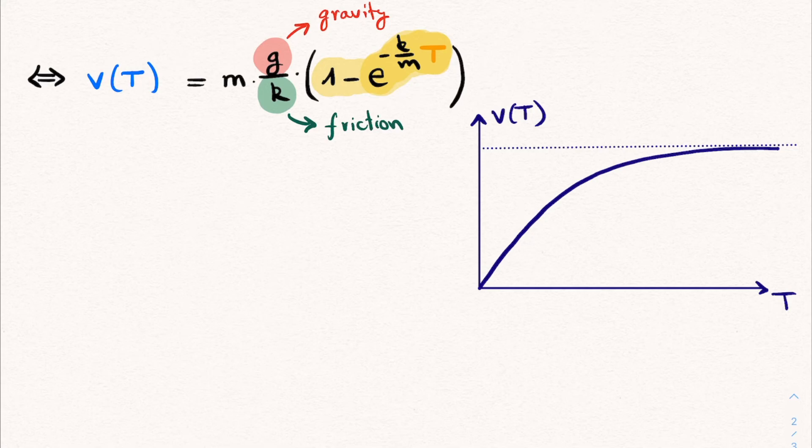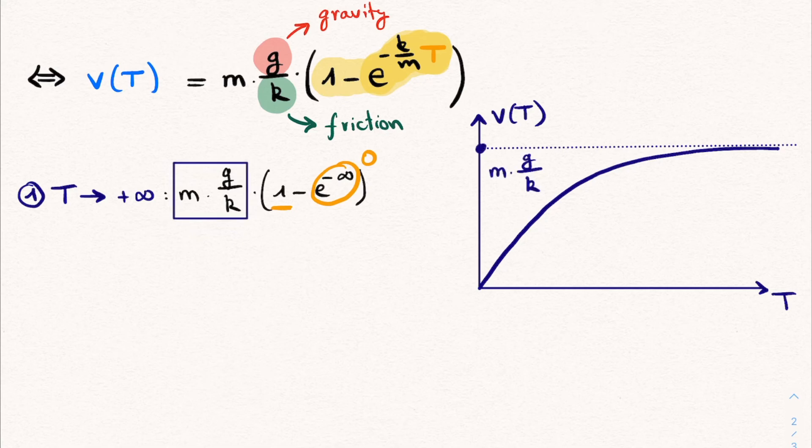But what is the exact expression for this terminal velocity? Well having our formula at hand, we can easily obtain it. We just look at the limit where t goes to infinity. Filling this in, we see that this e power becomes e to the power of minus infinity, which is of course 0, therefore we get 1 minus 0, which is simply 1. And what remains is this factor in front of it, m times g divided by k. And thus for the terminal velocity, we again see this clear competition between the gravitational force pulling the object towards the ground and the frictional force trying to reduce its velocity.